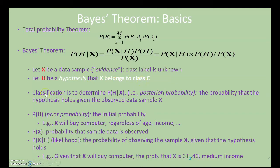So the classification task is to determine the probability of a certain hypothesis that belongs to the observed data sample X. To do this calculation, we need to have three values which are P(H), P(X), and P(X|H).